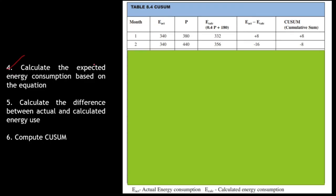Step 4: calculate the expected energy consumption based on the equation. The equation is E = 0.4P + 180. For the first data point, P = 380, so E_calculated = 0.4 × 380 + 180 = 332. You simply substitute each production value into this equation to generate the calculated energy column.